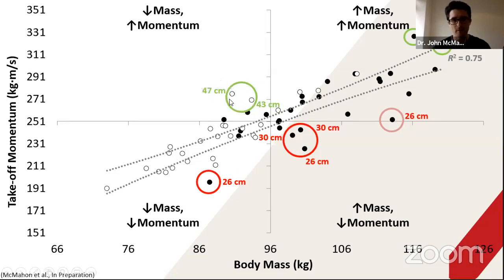47 centimeters, by the way, places them in about the top 3% for typical professional rugby league countermovement jump heights. So what we then want to do is look at the reasons why these athletes have got a heavy body mass but they're actually showing low momentum.